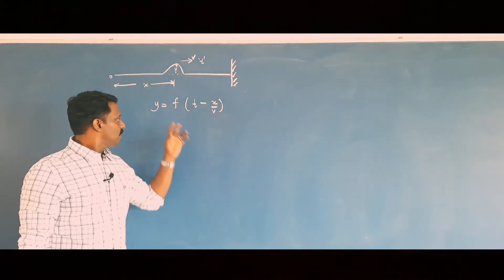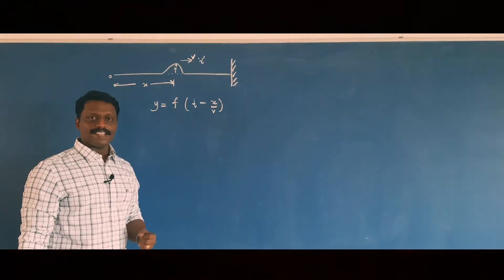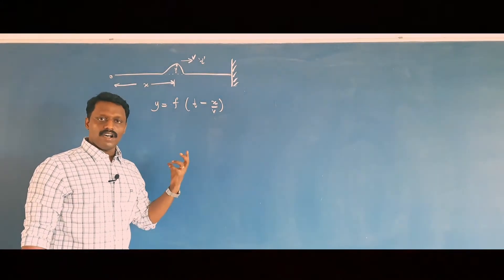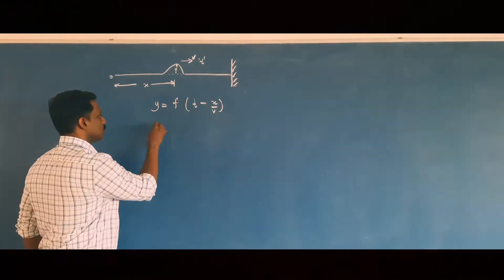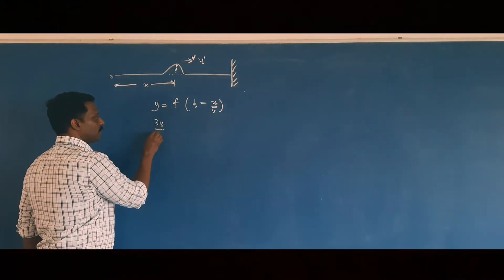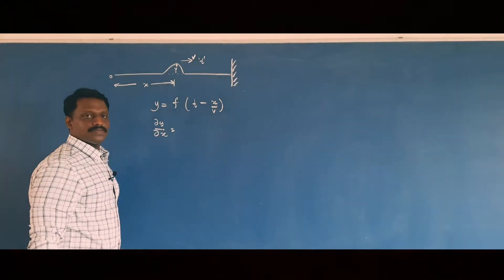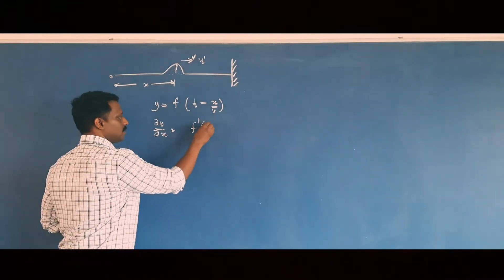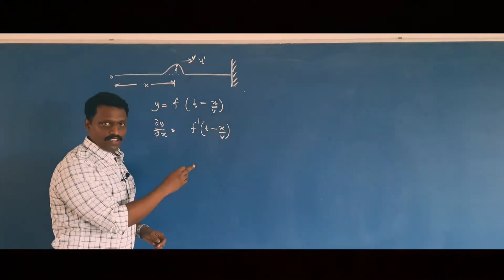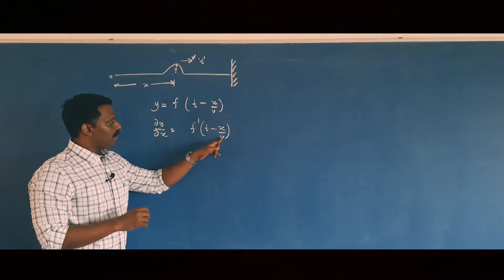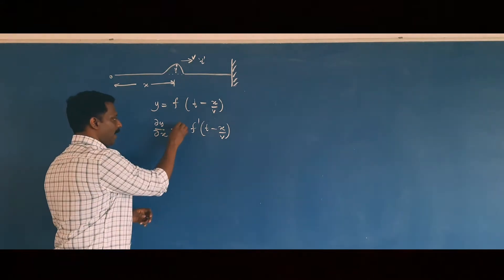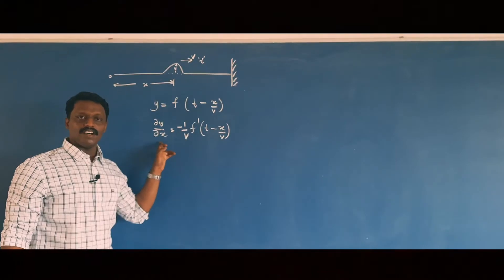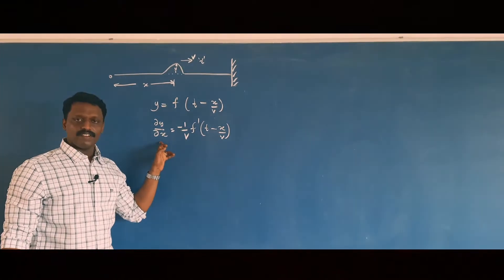Now, let us differentiate this equation partially with respect to x as well as with respect to t, twice. Differentiating partially with respect to x: ∂y/∂x = f′(t − x/v) × (−1/v), so the first derivative with respect to x is −(1/v) f′(t − x/v).